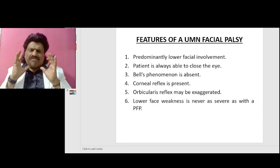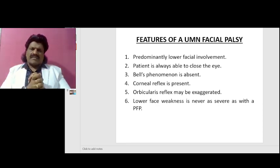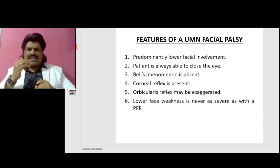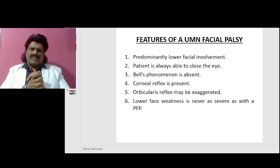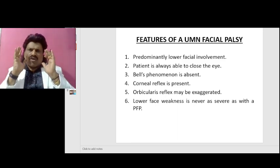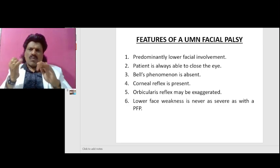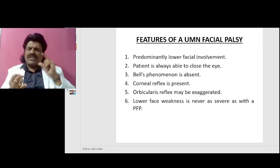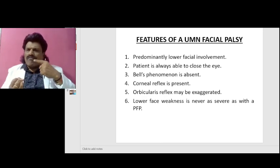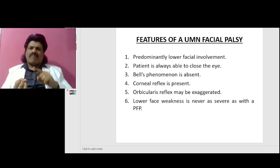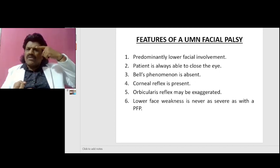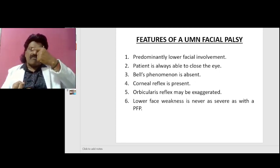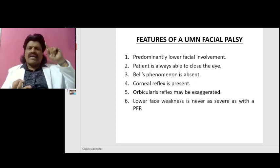What are the features of a UMN facial palsy and how can we differentiate it from an LMN facial palsy? The features of a UMN facial palsy are: one, it predominantly affects the lower facial muscles. Since upper facial muscles are spared, the patient is always able to close the eye.